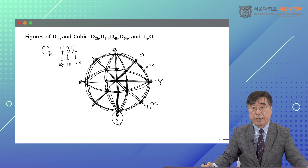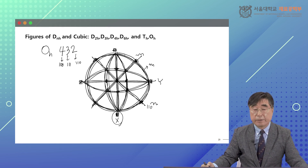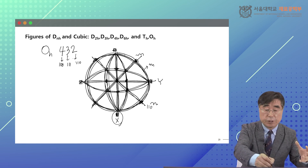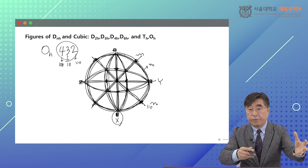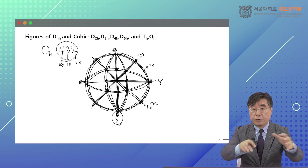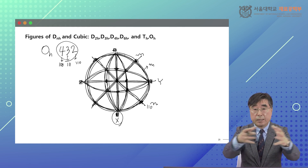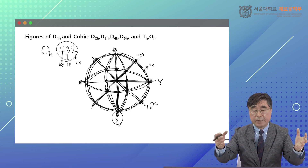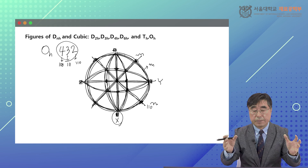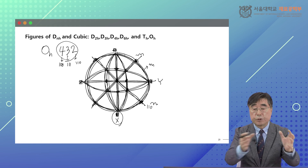Multiplication-wise, it generates 48 general poles. When you do 4-3-2, that's 24. Then the horizontal mirror plane doubles it — upper pole reflects to down-pole — so it generates 48. I don't want to draw all the poles here; I'm sure you can do it.